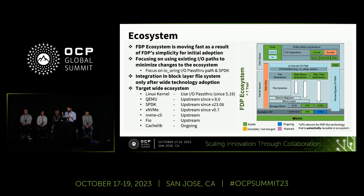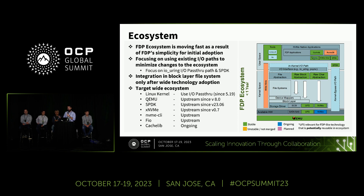Regarding the ecosystem: typically what takes time in open source is when you start touching main infrastructure, especially in the Linux kernel. Changes to the block layer or file systems can be a multi-month or even multi-year effort. We are in the process of doing it. However, we worked with the community to enable IO pass-through — a way in the Linux kernel to use the NVMe driver directly from user space. This lets you adopt FDP without having to update your kernel, without going through upstream process, and if you're a large data center you don't need to maintain forked code. FDP relies on this path, so whatever changes come to FDP in the future, you'll be able to leverage them without modifying your kernel.